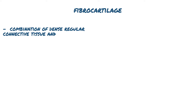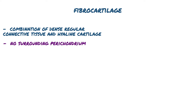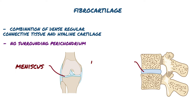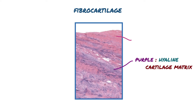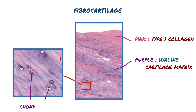Finally, fibrocartilage. Fibrocartilage is a combination of dense, regular connective tissue and hyaline cartilage. There is also no surrounding perichondrium, as in hyaline and elastic cartilage. Fibrocartilage is found in structures such as the meniscus and intervertebral disc. At low magnification, we can see alternating layers of purple hyaline cartilage matrix and thick layers of dense connective tissue that have type I collagen, which stains pink. We can also find chondrocytes within their lacunae, similar to the other types of cartilage.